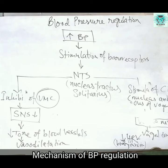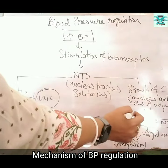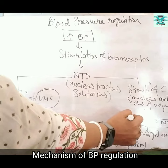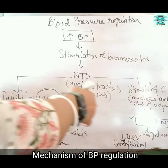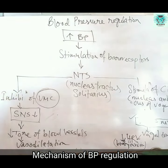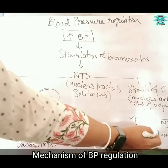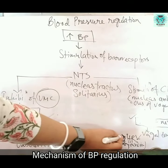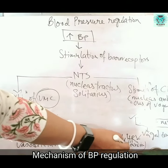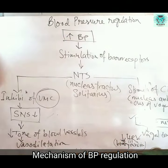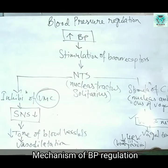At the same time, there is stimulation of the nucleus ambiguus of the vagus nerve, which is part of the parasympathetic nervous system. This causes an increase in vagal tone, which decreases the heart rate — a condition called bradycardia. So we can see that the stimulation of baroreceptors leads to these effects.